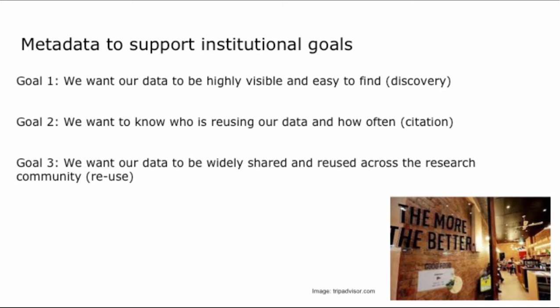ANS really wants to encourage institutions to think about what they want to achieve by publishing via Research Data Australia. In this session we'll look at a few goals that we expect might be quite common. One goal might be that we want our data to be highly visible and easy to find — a goal around discovery. Another would be wanting to know who is reusing our data and how often — a goal around citation metrics. Or we might just want our data to be widely shared and reused across the research community.